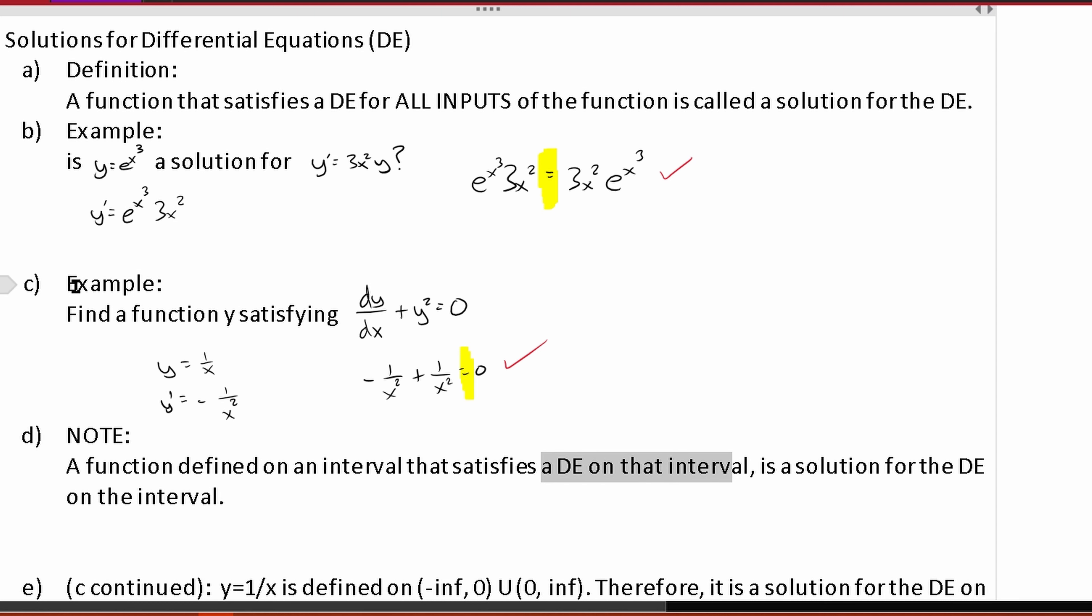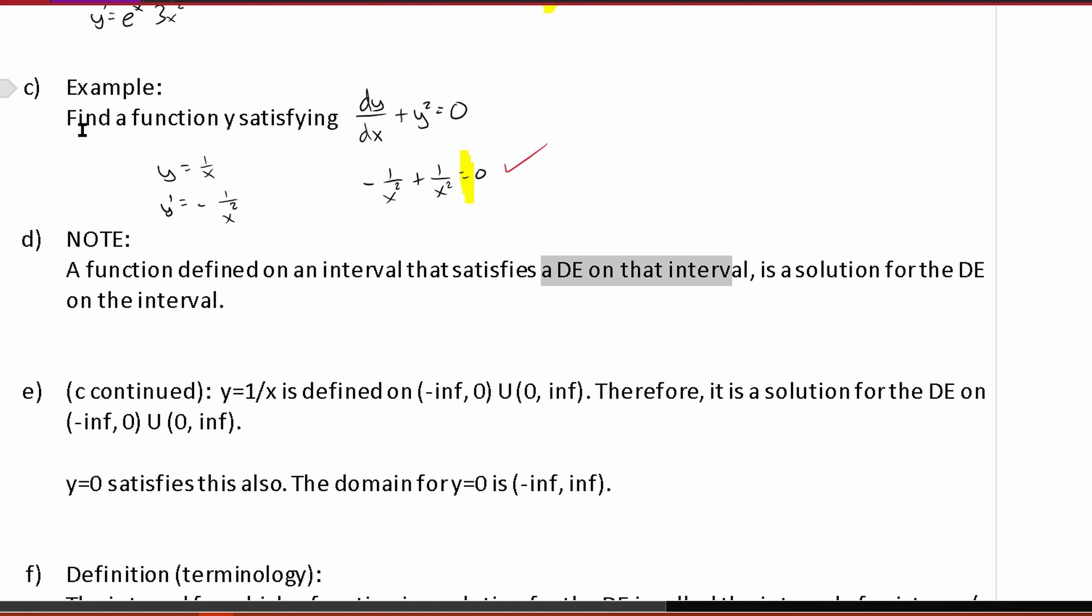So that's where we come back to C. So coming back to C, if we plug in 1 over x, notice that 1 over x is defined on negative infinity to 0, and then 0 to infinity. We can't plug in a 0 in the denominator, because we have 1 over 0.